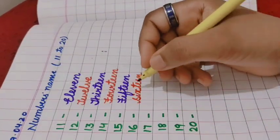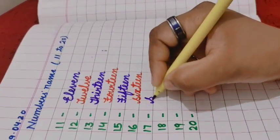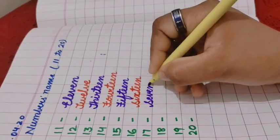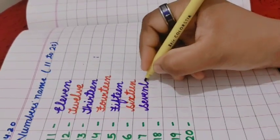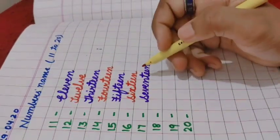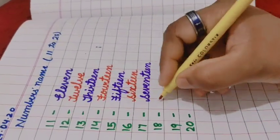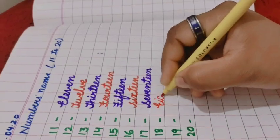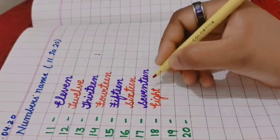Now for seventeen. First we will write seven. S-E-V-E-N-T-E-E-N, seventeen. Next, eighteen. E-I-G-H-T-E-E-N, eighteen.